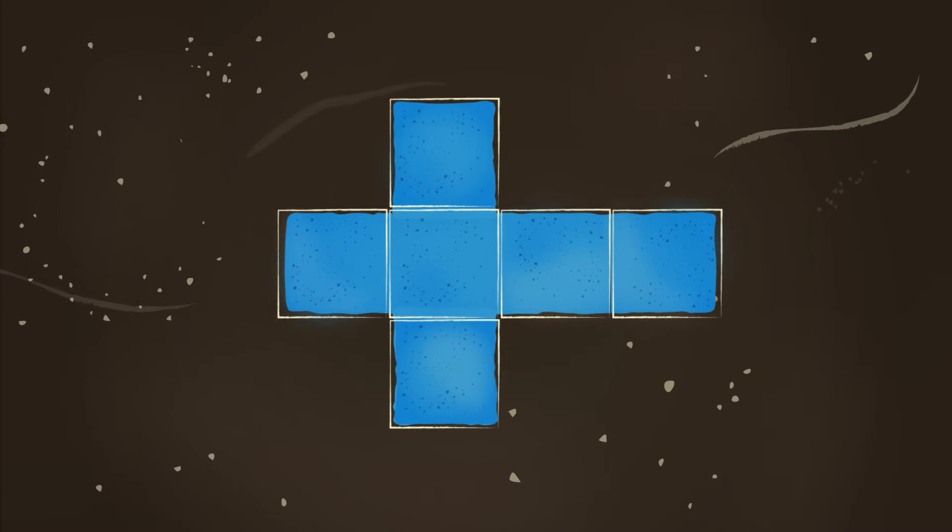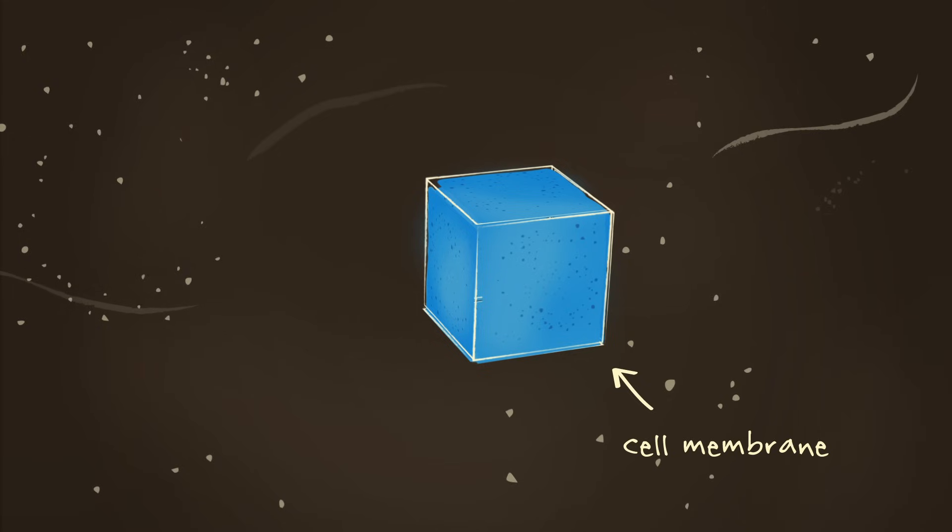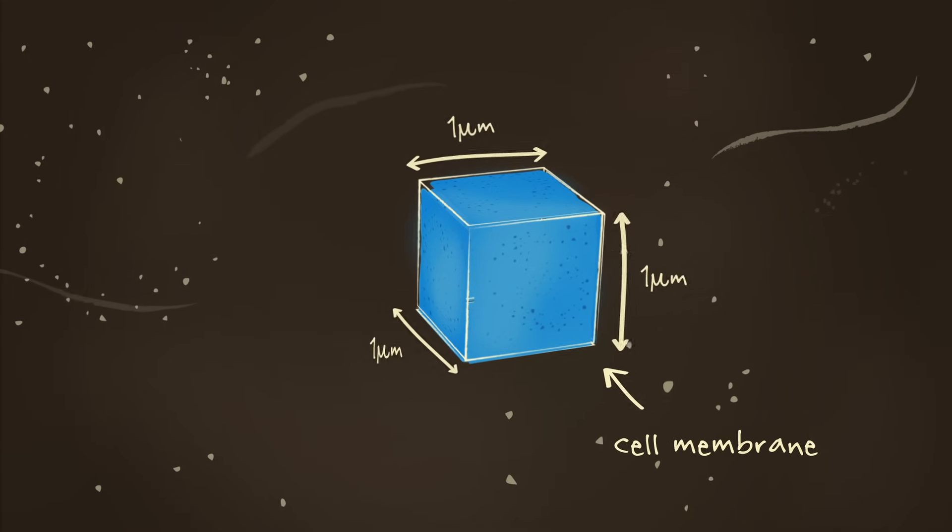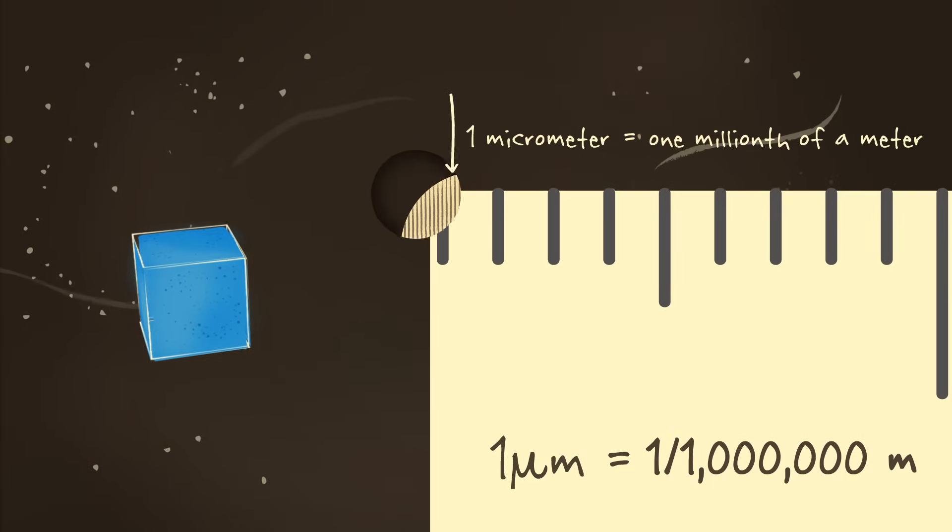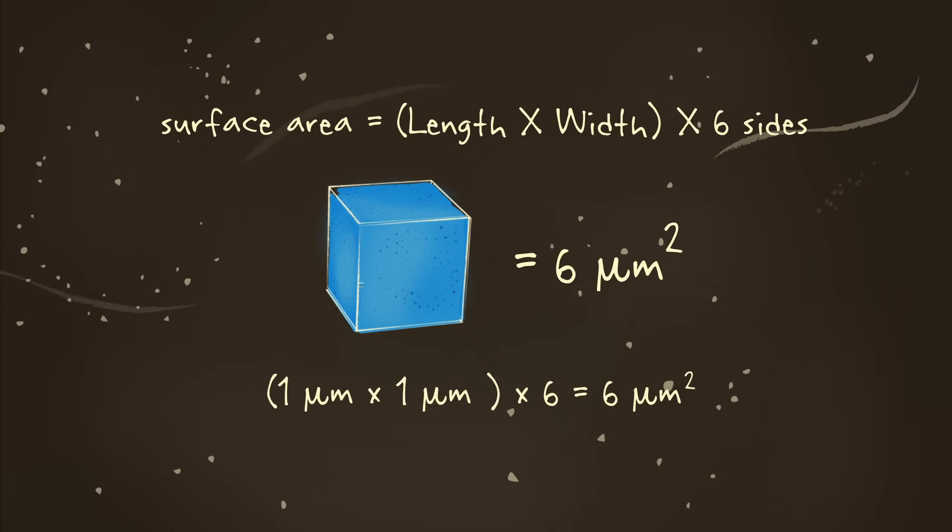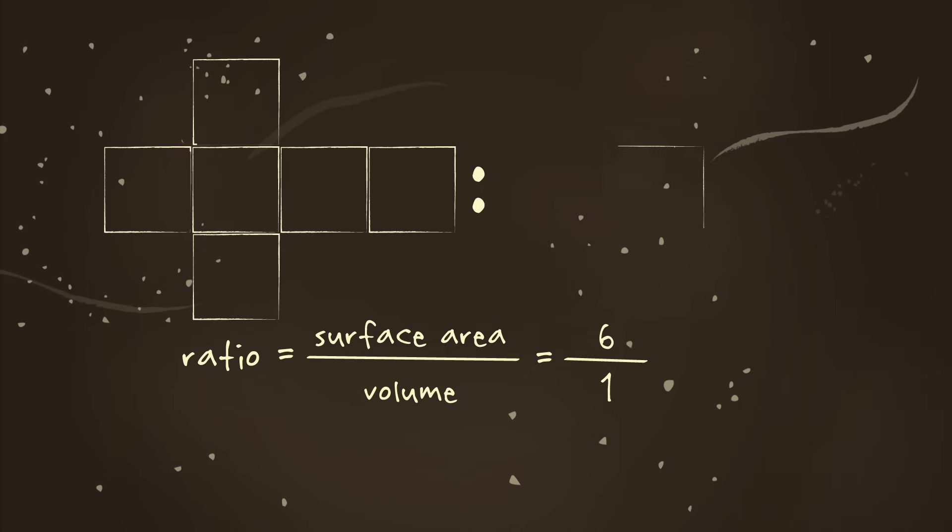A cube has six faces. These represent the cell membrane and make up its surface area. A cube measuring one micrometer on each side, that's one millionth of a meter, would have a total surface area of six square micrometers. And its volume would be one cubic micrometer. This would give us six units of surface area for every single unit of volume, a six to one ratio.